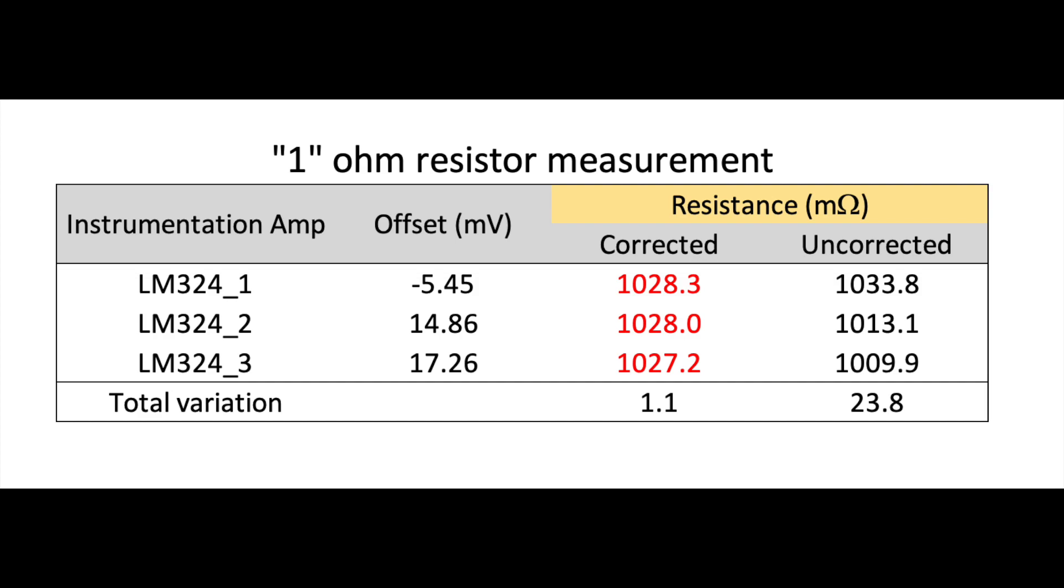So the actual value the meter gave me on the 34401A multimeter was 1028.3 millivolts, or that is equivalent in milliohms. And if it was uncorrected, it would be 1033.8 because of the 5.5 millivolt offset. The other two readings were 1028.0 and the last one 1027.2. So these readings are within 1.1 milliohms of each other, very accurate or 0.1% given a 1 ohm resistor. If I didn't correct it for that, it would be 23.8 ohms variation, and that would be basically a 2.3% variation, which would be unacceptable.